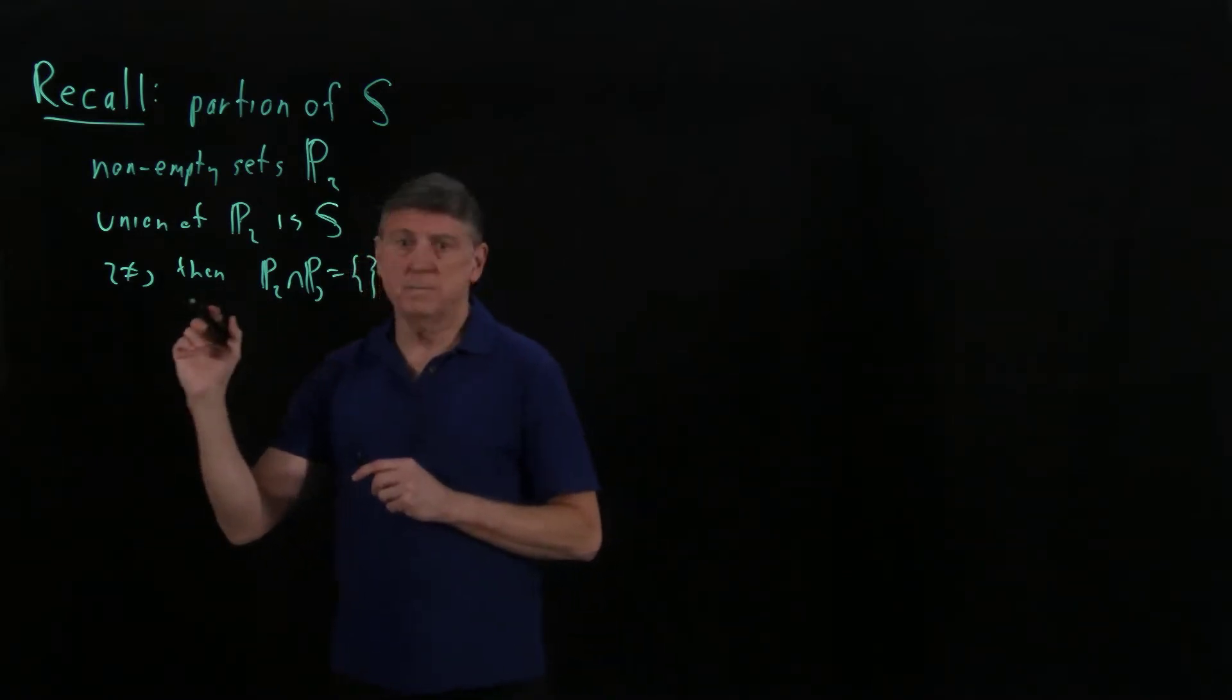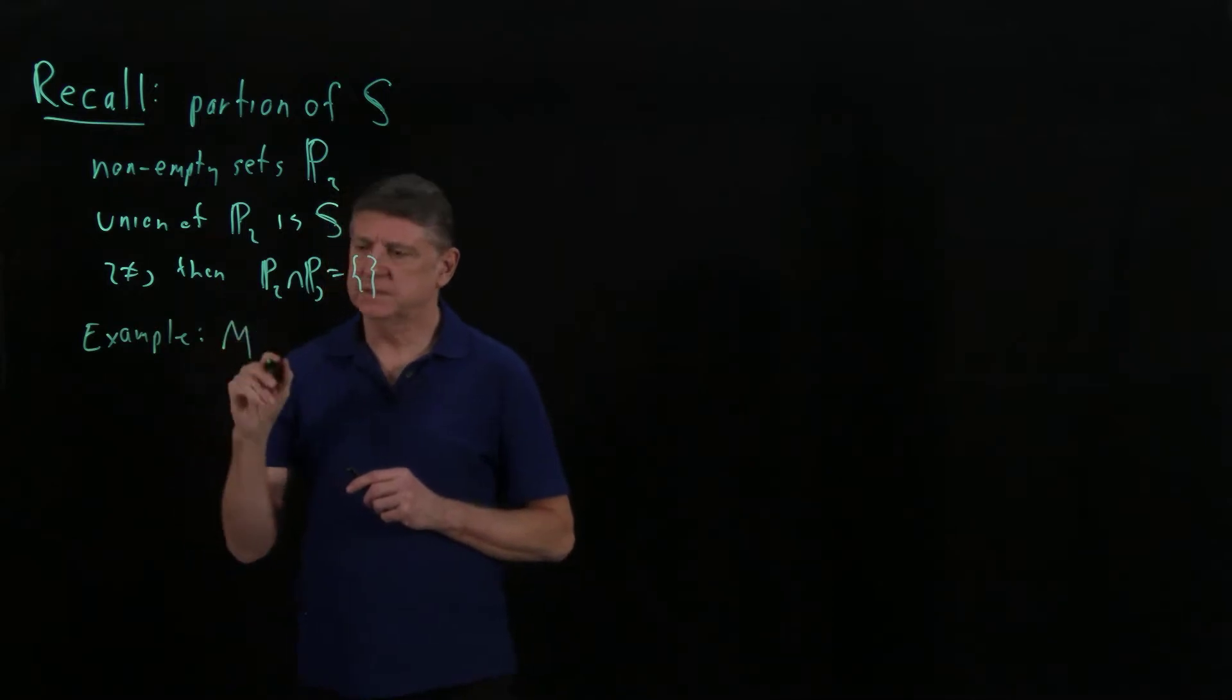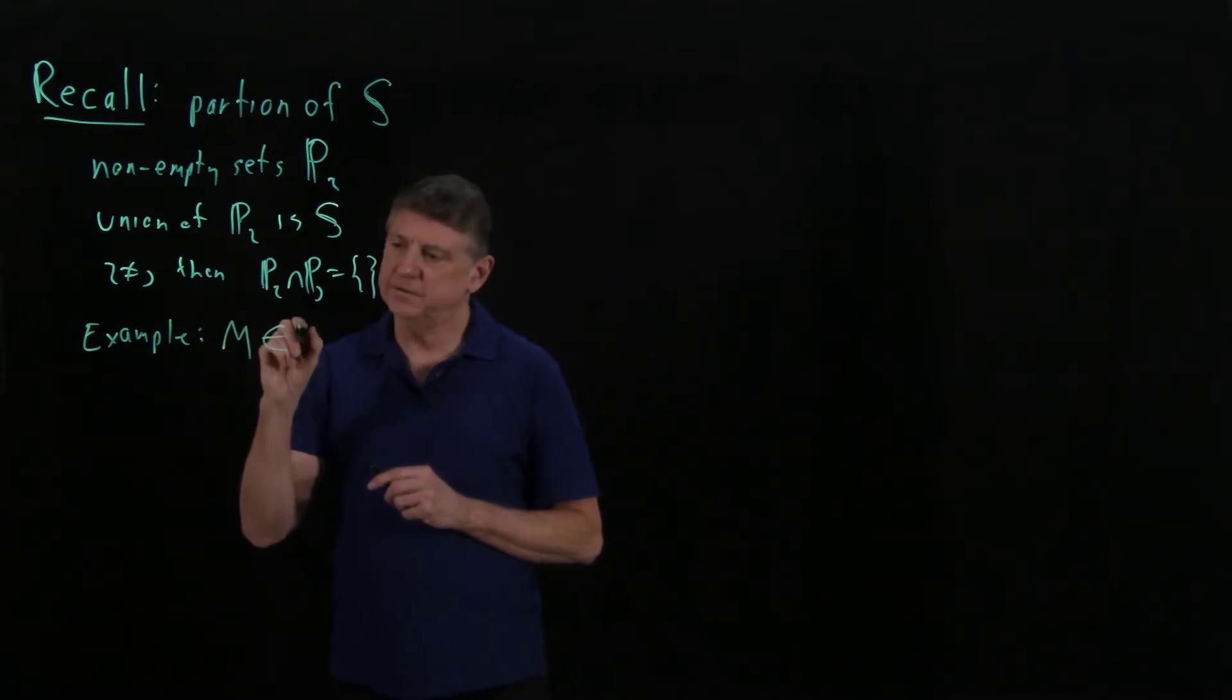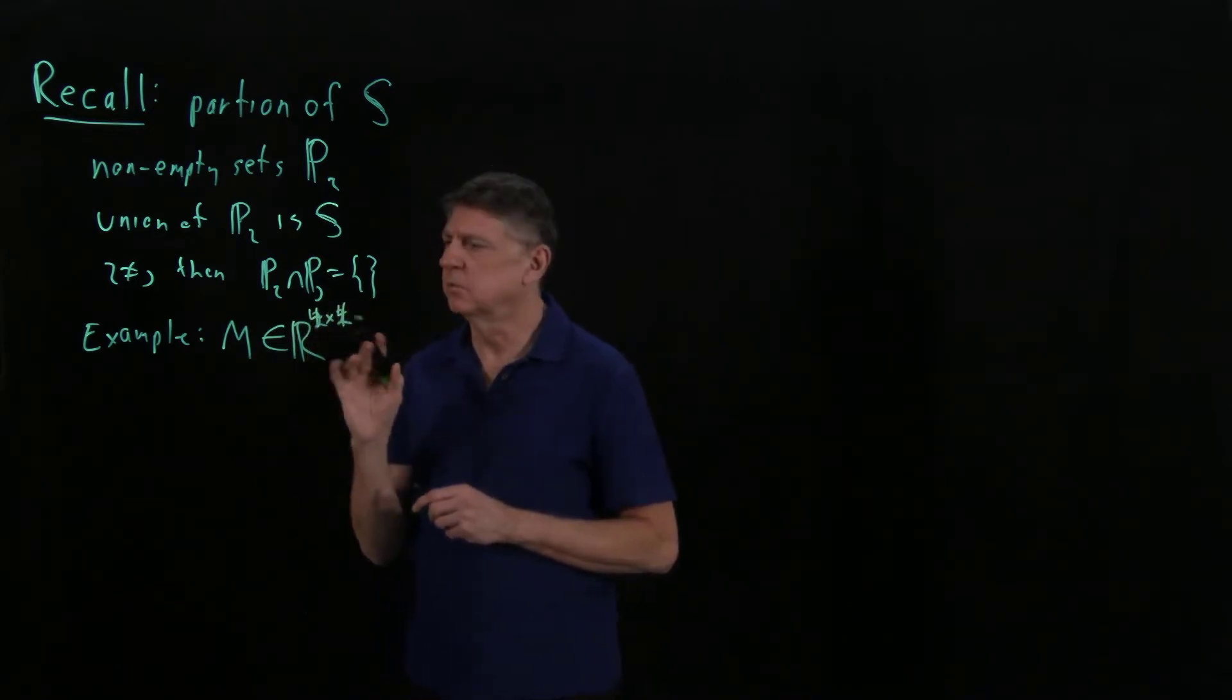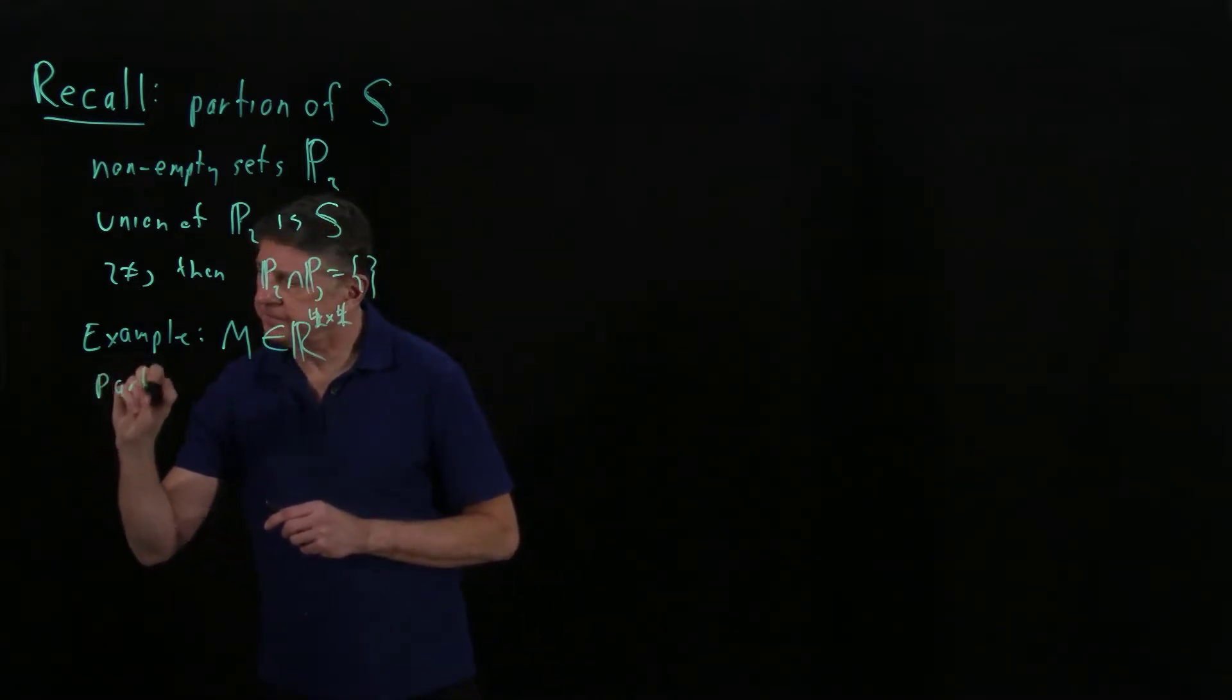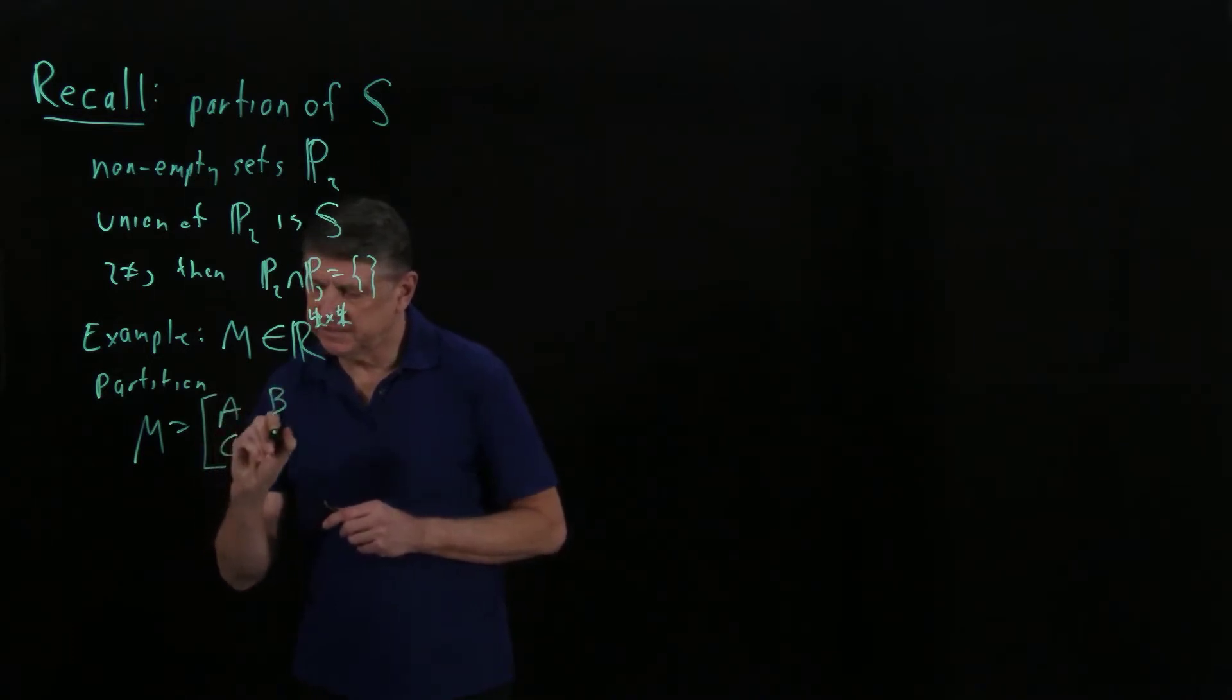Now, where it matters to us is an example. So suppose that we have a matrix, and let's suppose that it's four by four. This will make it a little more interesting. So what we can do is we can partition this matrix M as, for example, A, B, C, D.